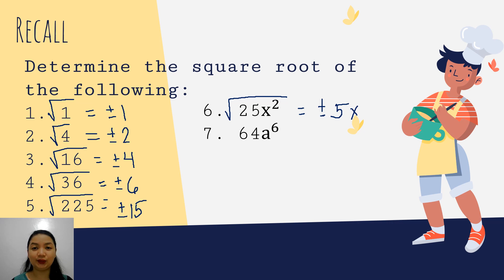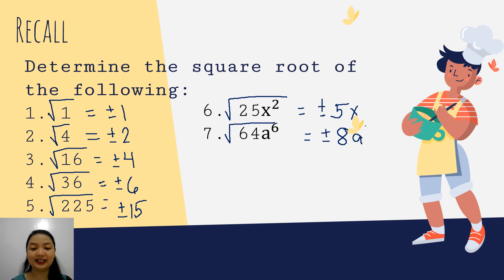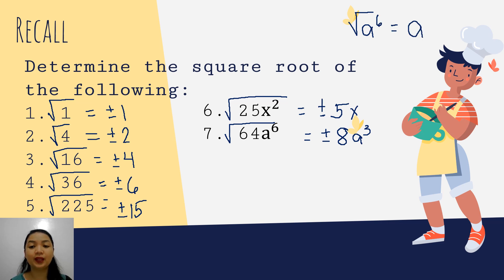How about 64a to the 6th? Let us get the square root of this term. The square root of 64 is 8, so we have positive, negative 8. For a to the 6th, we divide 6 by 2 since in radical form the index becomes the denominator of the fraction. So the square root of a to the 6th is a to the 3rd power, because 6 divided by 2 equals 3.